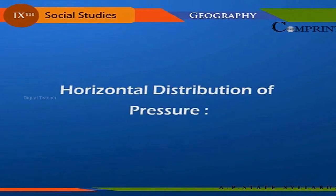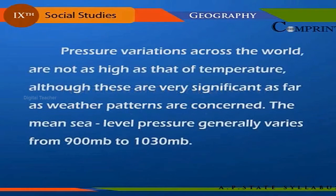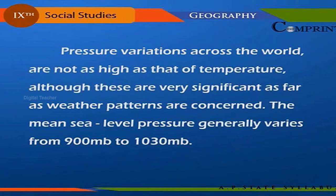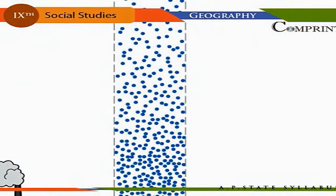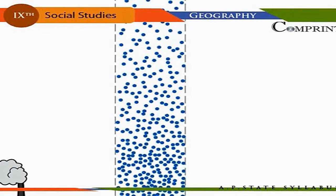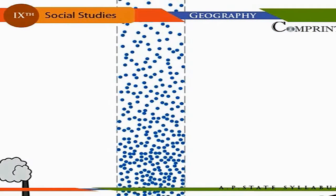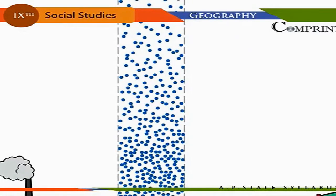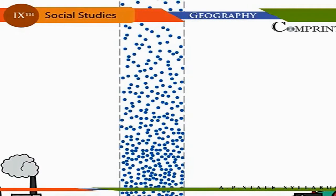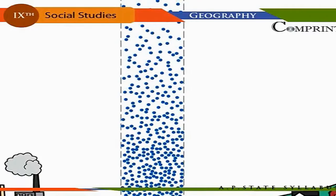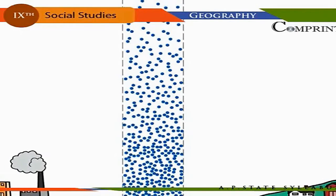Horizontal distribution of pressure: pressure variations across the world are not as high as that of temperature, although these are very significant as far as weather patterns are concerned. The mean sea level pressure generally varies from 900 mb to 1030 mb. The characteristic feature of the horizontal distribution of global atmospheric pressure is the prevailing pattern of alternate high pressure and low pressure belts.